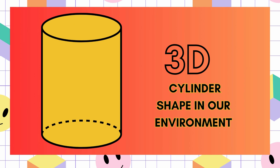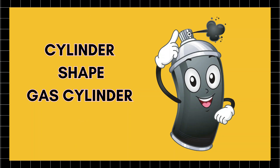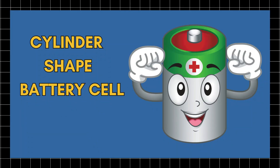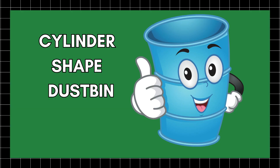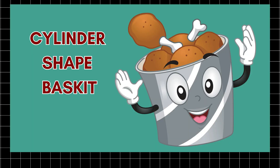3D Cylinder Shape in our environment. Cylinder Shape: Gas Cylinder. Cylinder Shape: Battery Cell. Cylinder Shape: Dust Bin.